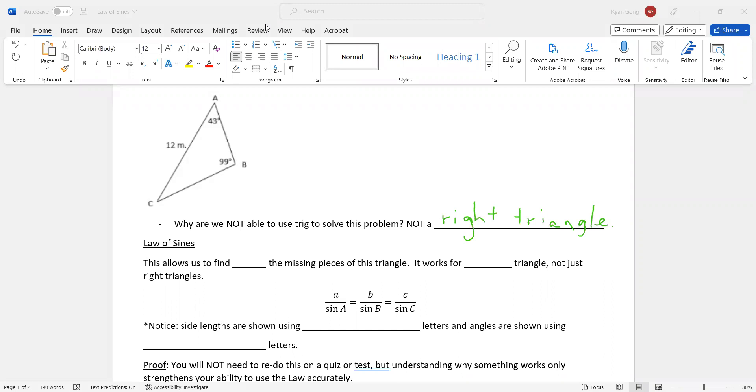This allows us to find all the missing pieces of this triangle. You can literally find all the missing pieces. Good news is for law of sines, it works for any triangle, not just right triangles. And the law of sines is right there. Basically, it's saying that the side over the sine of the opposite angle of that side is equal all the way across the triangle.